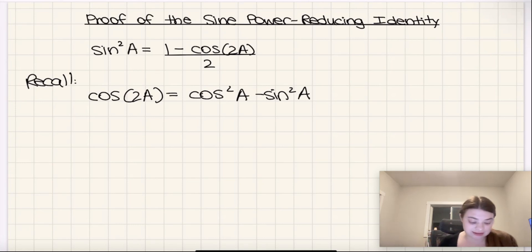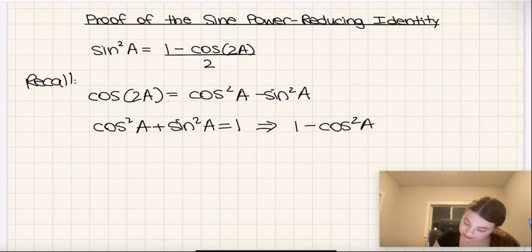Given this, we also consider the Pythagorean identity: cosine squared A plus sine squared A equals 1. This implies that 1 minus cos squared A equals sine squared A,